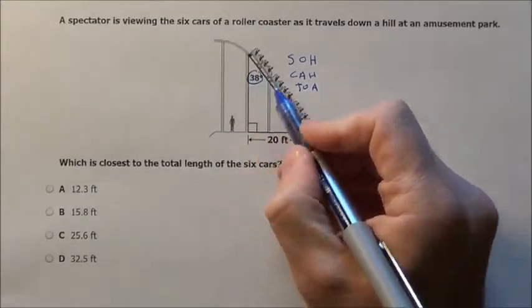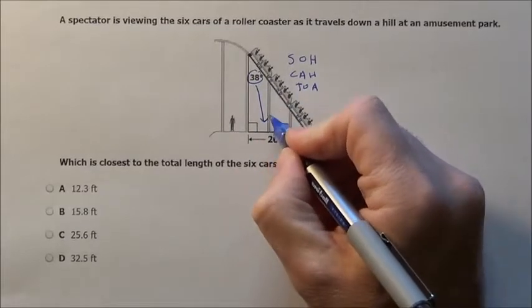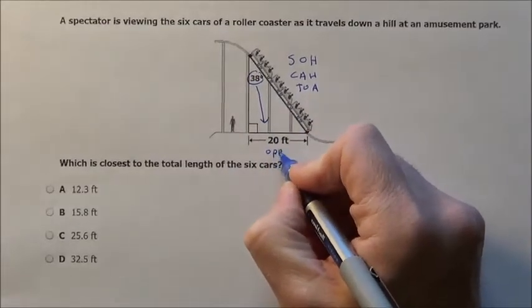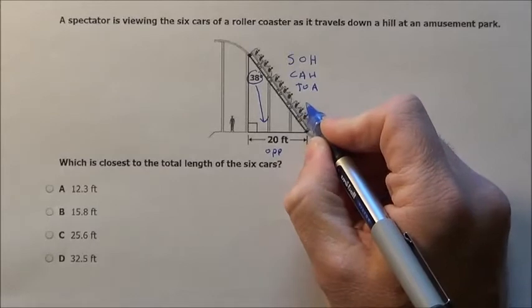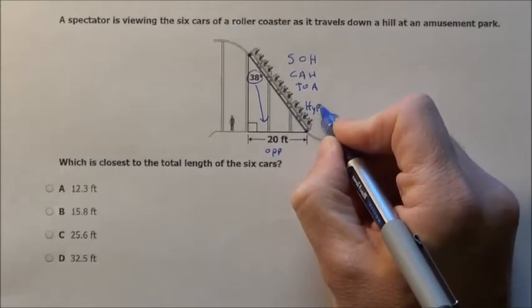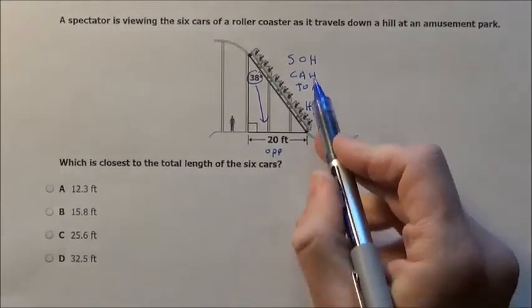I have 38 degrees. I have the opposite side over here, and I'm trying to find this, the roller coaster bit, which is the hypotenuse piece. So I have opposite and hypotenuse.